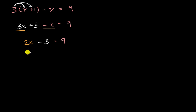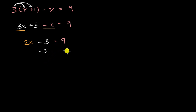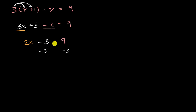The next thing I like to do is isolate the x terms on one side, so I want a left side that just has two x. The way to do that is I would have to subtract three from the left side. But anything that we add, subtract, multiply, or divide on one side of the equation, we have to do on the other side. If two x plus three is truly equal to nine, then if I take three away from two x plus three, I also have to take three away from nine in order for the equivalence of both sides of the equation to be maintained.